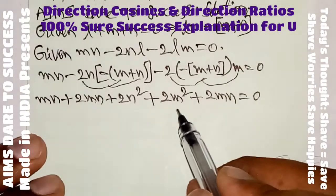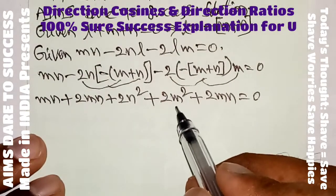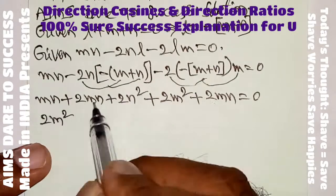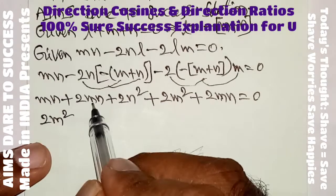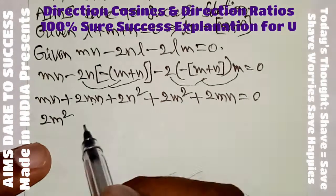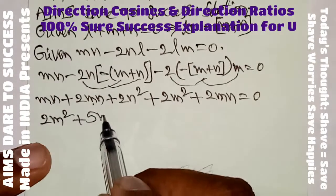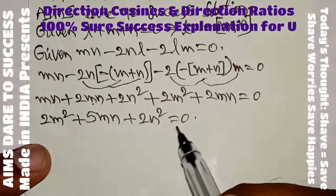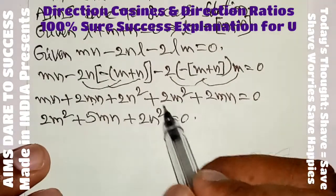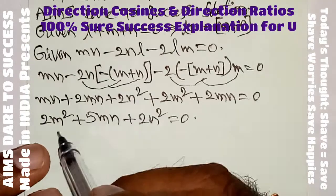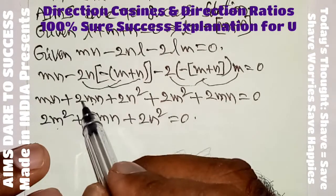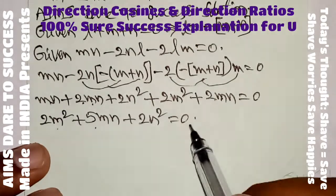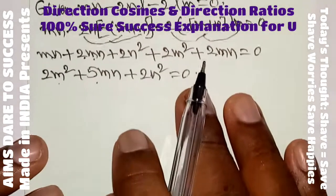Writing in alphabetical order — m squared, mn, n squared terms. We have 2m squared; the mn terms are 2mn plus 2mn plus mn, giving 5mn; and the n squared term is 2n squared. So the simplified equation is 2m squared plus 5mn plus 2n squared equals 0.